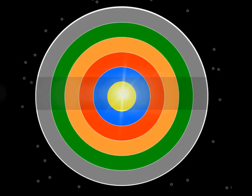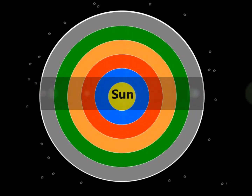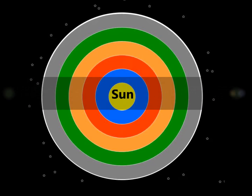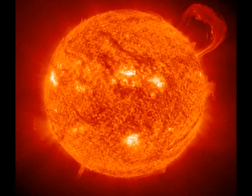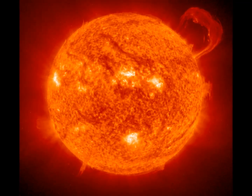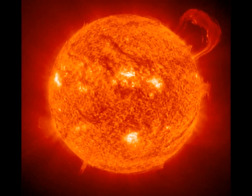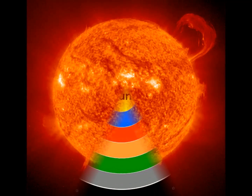Our Sun is a unique object and the only star in the solar system. The Sun has its place at the center with every object in our solar system orbiting around it.